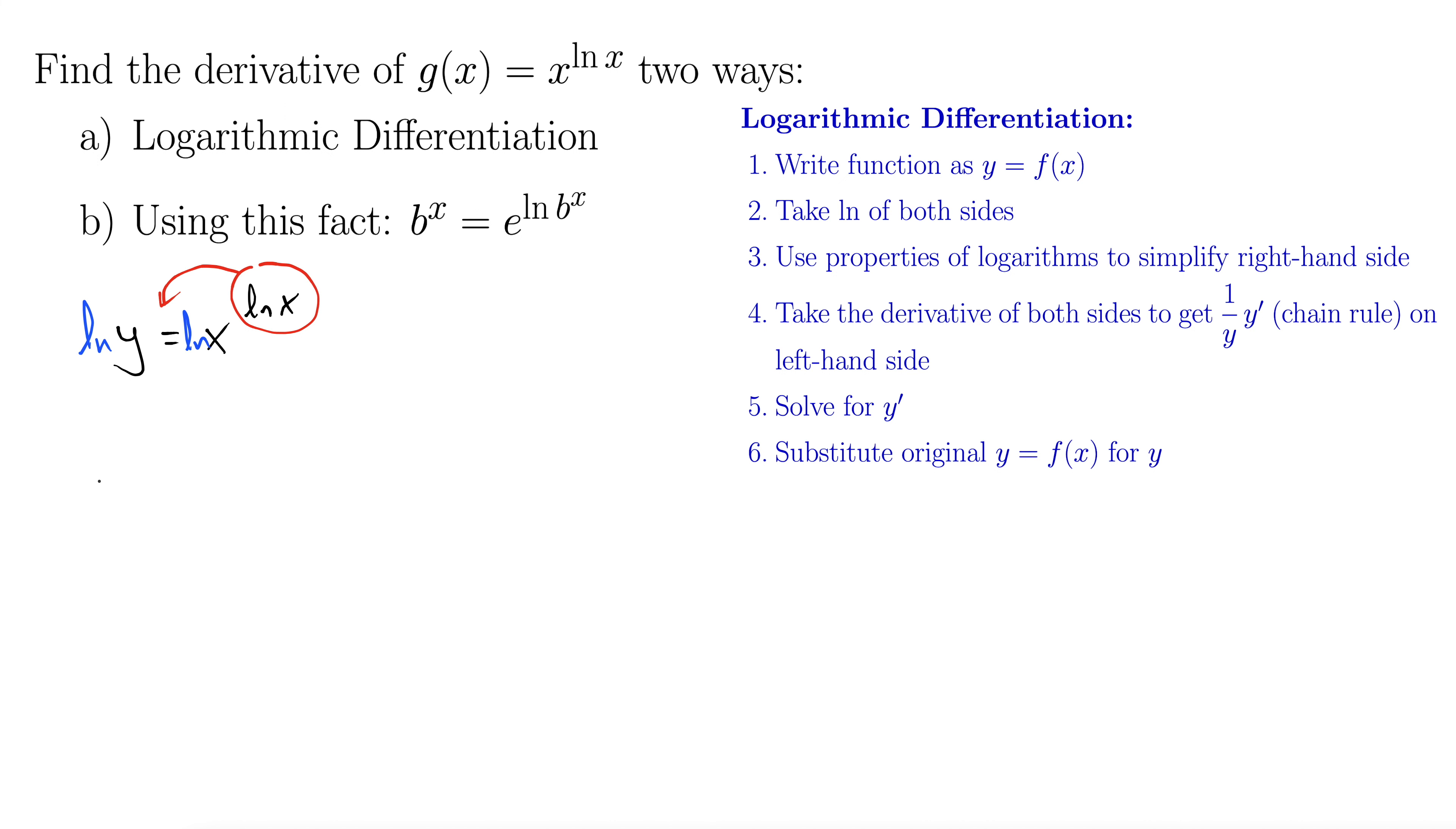Okay, so now let's rewrite it so we have natural log of y equals natural log of x times natural log of x. I'll even rewrite this again as natural log of y equals natural log of x quantity squared.